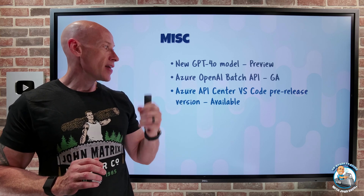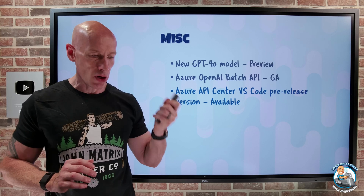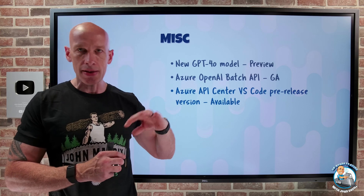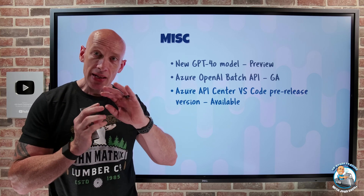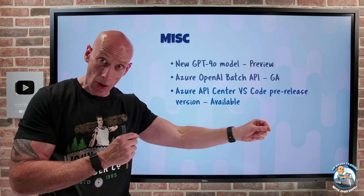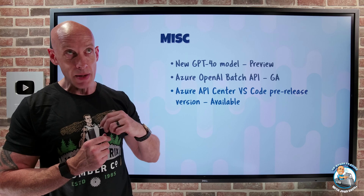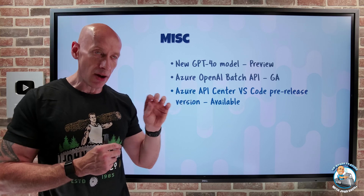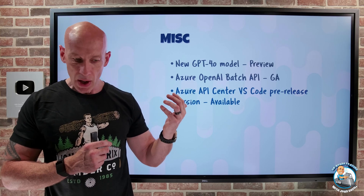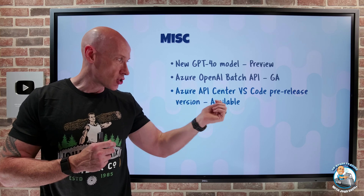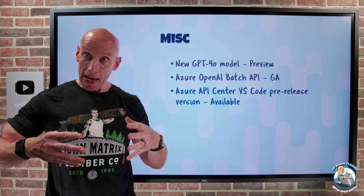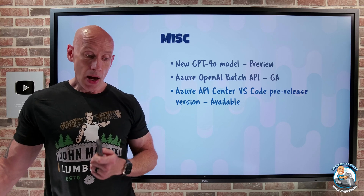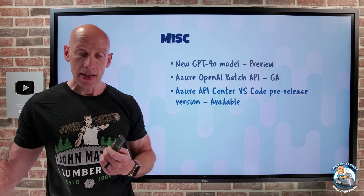Azure API Center's VS Code extension now has a pre-release version. Azure API Center provides a design-time API governance and central repository for an organization's APIs — very different from API Management, which is a runtime API used to abstract and expose APIs securely at scale, monitor them, apply governance, etc. This extension lets developers discover and try out APIs, and with the pre-release version you get access to newer features. For example, today I can create OpenAPI specification files from my API code with GitHub Copilot, and generate markdown documentation for any API that is in API Center.